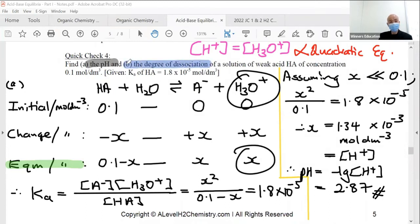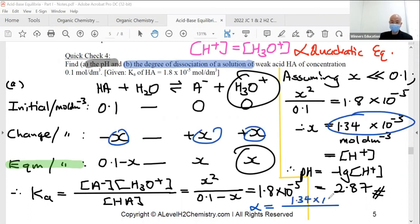I'm going to carry on to calculate part B, which is degree of dissociation. The first formula we have, alpha, is the amount of acid ionized divided by the amount of acid used. How much ionized, which is X value, i.e. this value. So 1.34 times 10 power minus 3.